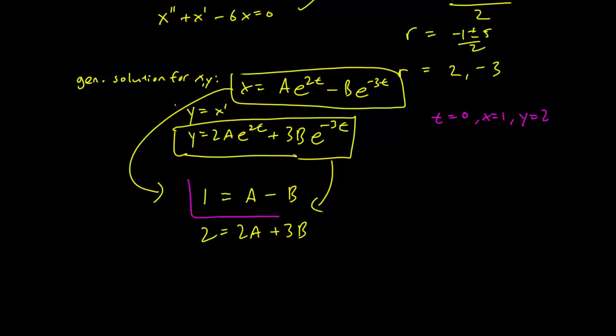So let's call these equations 1 and 2. So now we have a system of algebraic equations. This one isn't too difficult to solve. Notice that if we take the second equation minus twice the first equation, we get 0 equals 3B minus 2 plus 5B. So 5B equals 0, which implies that B equals 0.